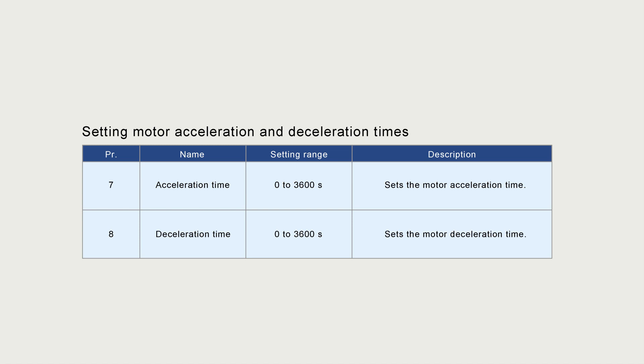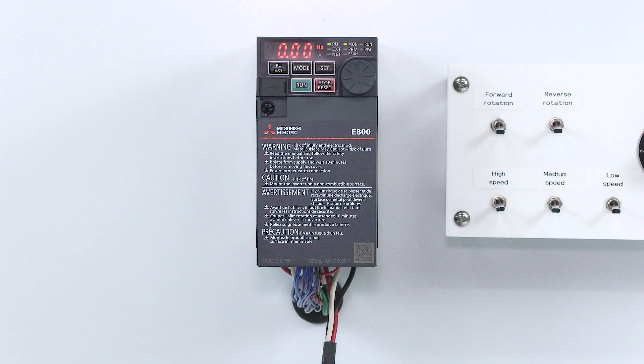Set motor acceleration and deceleration time with parameters 7 and 8. To set parameter 7, push the MODE key.